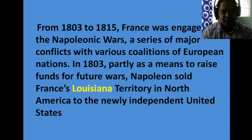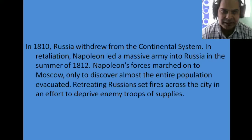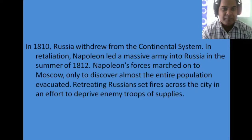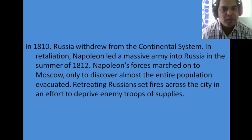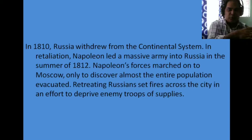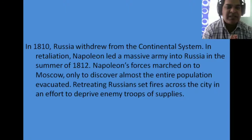In 1810, Russia withdrew from the continental system — Napoleon's Europe-wide blockade. In retaliation, Napoleon led a massive army into Russia in summer 1812. Napoleon's forces marched on to Moscow, the capital of Russia, only to discover that almost the entire population had evacuated before his arrival.